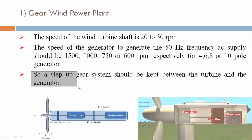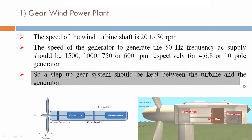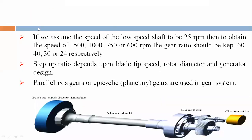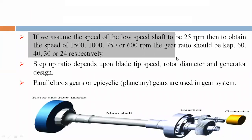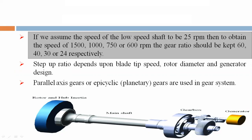A step-up gear system must be kept between the turbine and the generator, connecting the low speed turbine shaft to the generator shaft. If we assume the speed of the low speed shaft to be 25 RPM, then to obtain 1500, 750, or 600 RPM, the gear ratio should be 60, 40, 30, and 24 respectively.